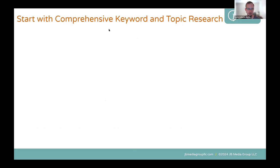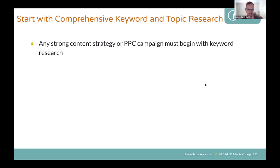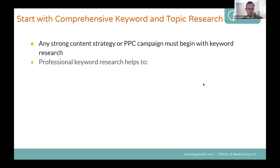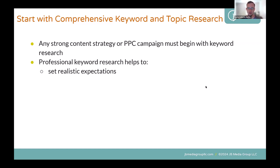The first thing is keyword research. Any strong content strategy or pay-per-click campaign — and the Google Grant is a type of pay-per-click campaign — must begin with keyword research. Professional keyword research helps set realistic expectations. If you know how many people are searching for certain things, you can expect to get 5% to 10% of those people to your website. If those numbers are really high, you can expect a lot of traffic; if the keywords you're targeting are very low, you may get very little or no traffic at all.